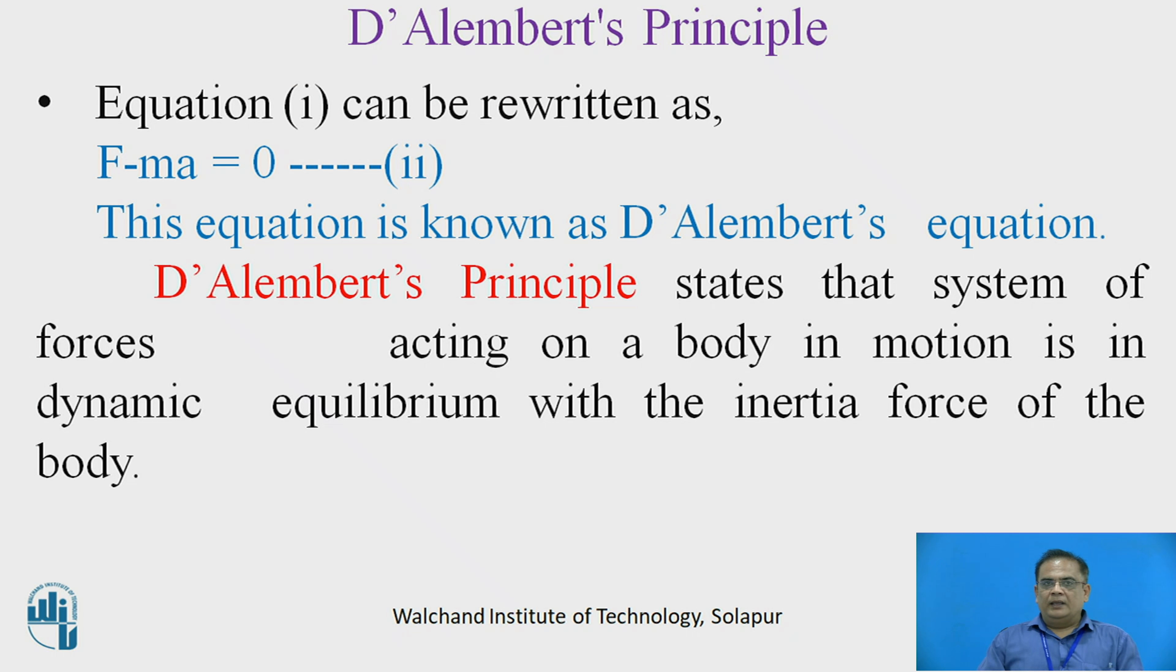Let this be equation 1. Now, equation 1 can be rewritten as F minus Ma equal to 0. This equation is known as D'Alembert's equation. So, D'Alembert's Principle states that system of forces acting on a body in motion is in dynamic equilibrium with inertia force of the body.